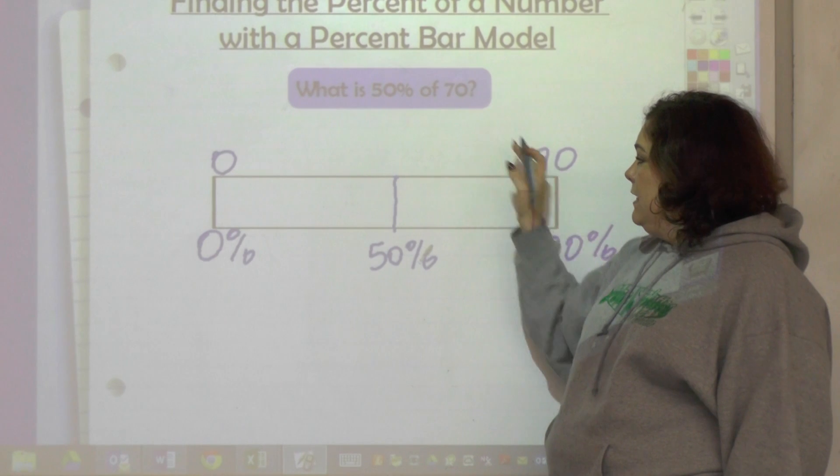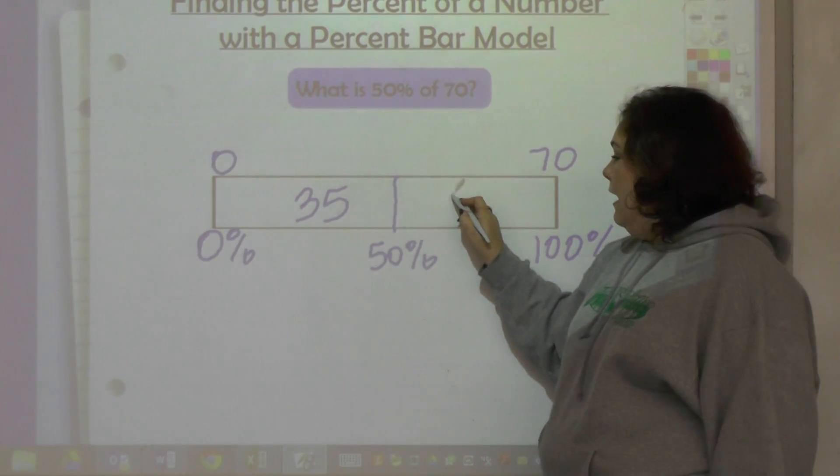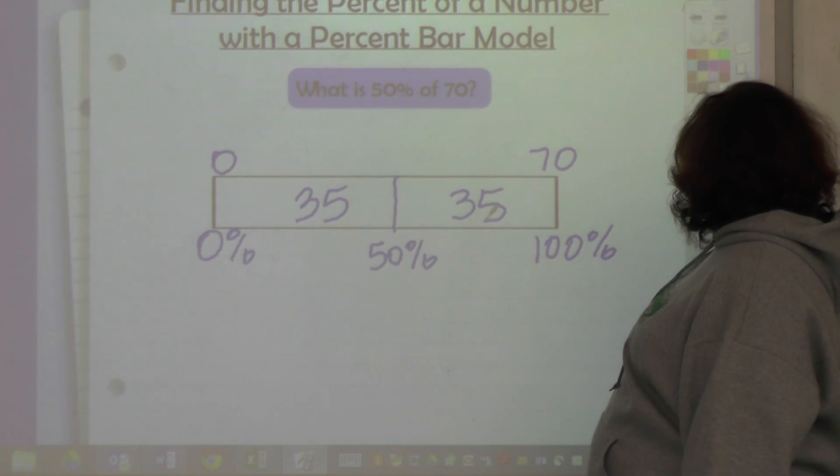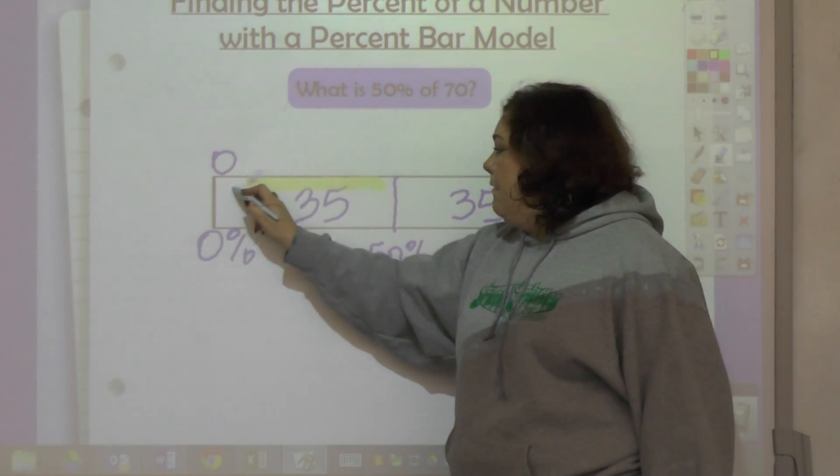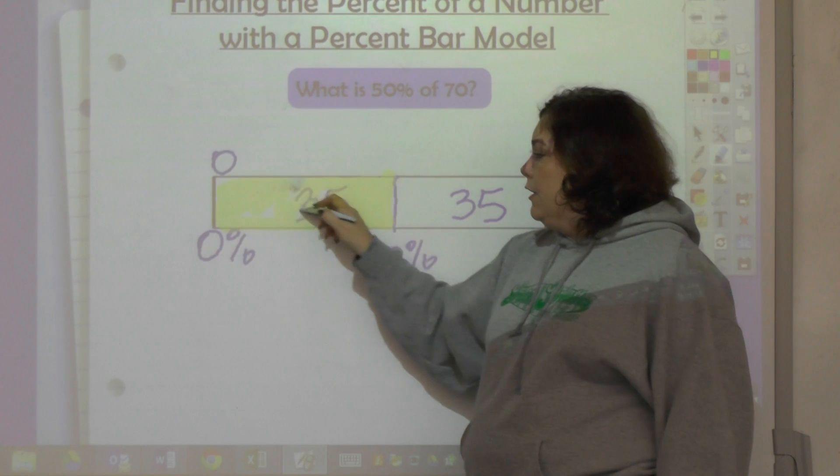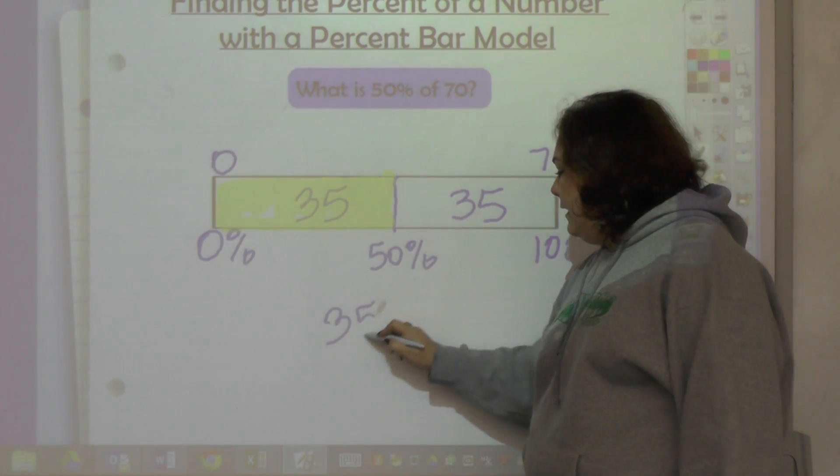So I would take 70 and divide it into two parts, and that would equal 35 and 35. So my answer is, what is 50% of 70? This takes me to 50%, so the answer is 35. So 35 is 50% of 70.